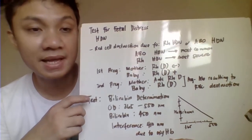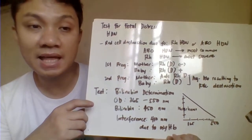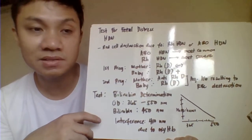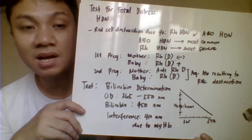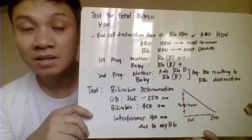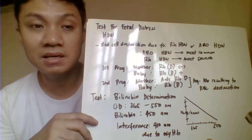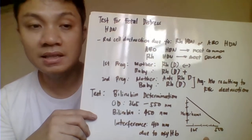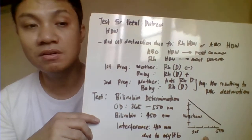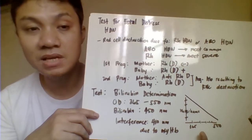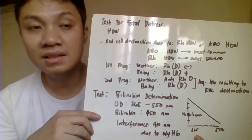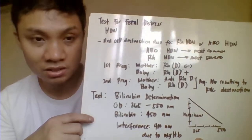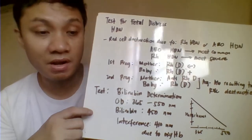HDN will only occur in the second pregnancy, where the mother already has the anti-RhD antibody. In the second pregnancy, the baby is again RhD positive. Now the mother has anti-RhD antibody, so it will bind to the RhD-positive red cells of the baby, forming an antigen-antibody complex. That results in destruction of the baby's red cells, mediated by complement, causing increased red cell destruction and therefore increased bilirubin production, since bilirubin is a breakdown product of hemoglobin.